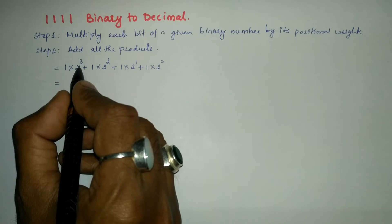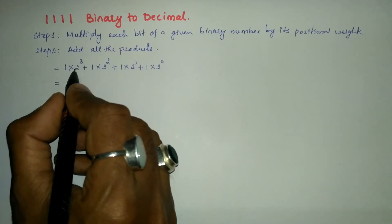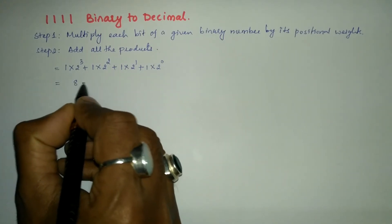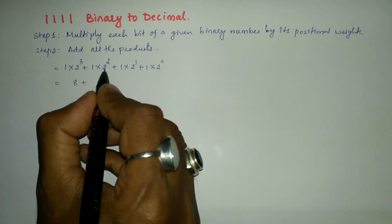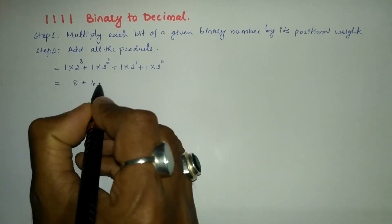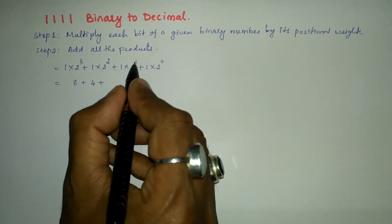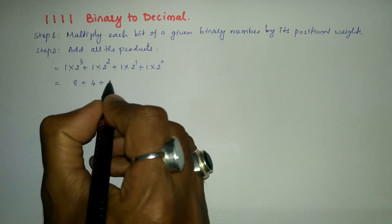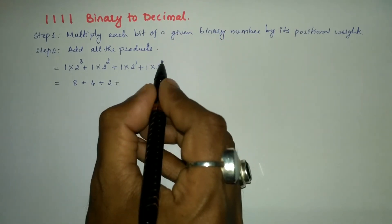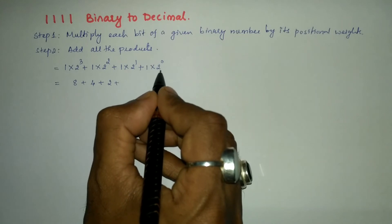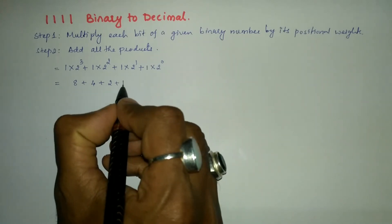8 × 1 = 8 + 2² is 4, 4 × 1 = 4 + 2¹ is 2, 2 × 1 = 2 + 2⁰, anything raised to zero is 1, 1 × 1 = 1.